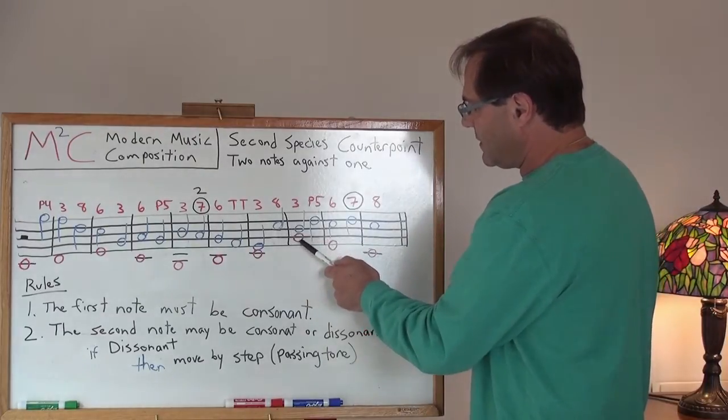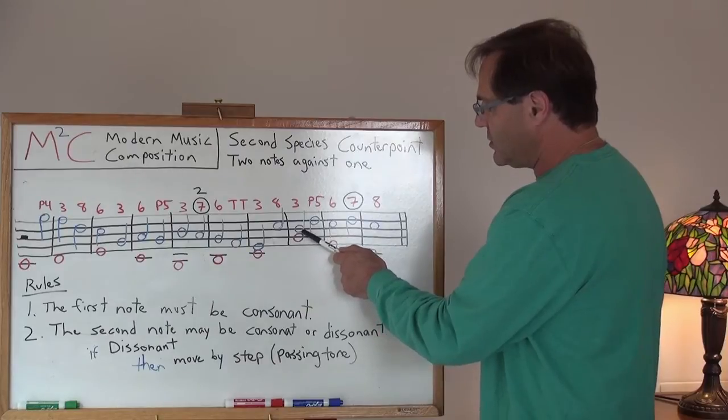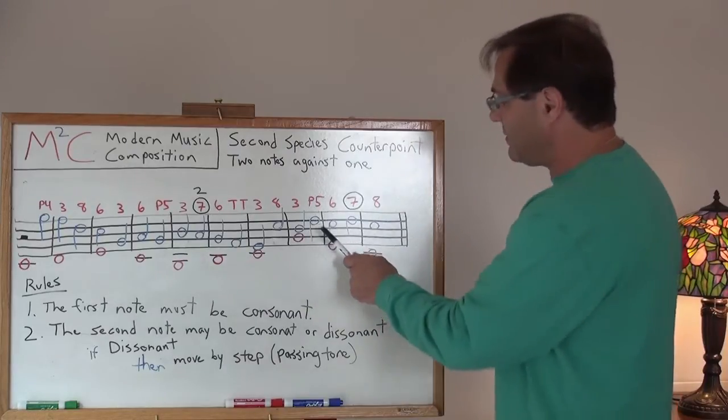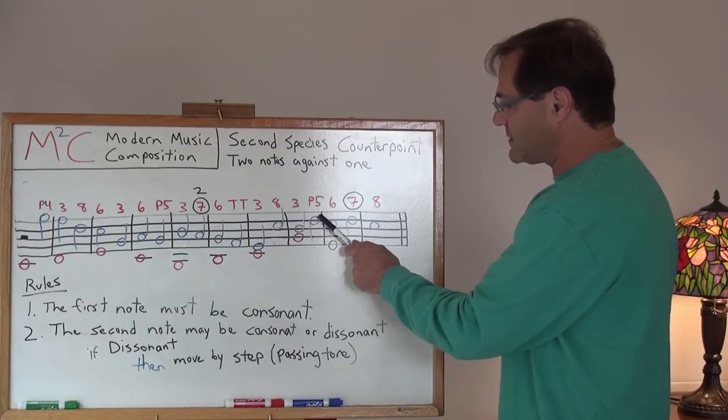Then I take, and continuing in our Cantus firmus, we've got a G to a B which is a third. I keep things consonant by taking it against a fifth, a perfect fifth, sorry.